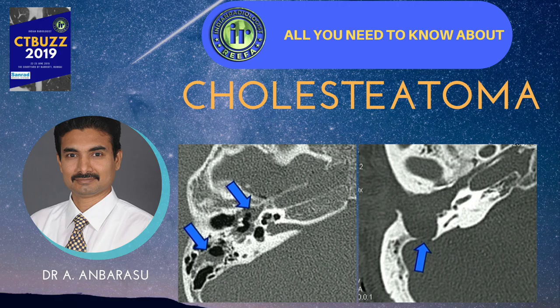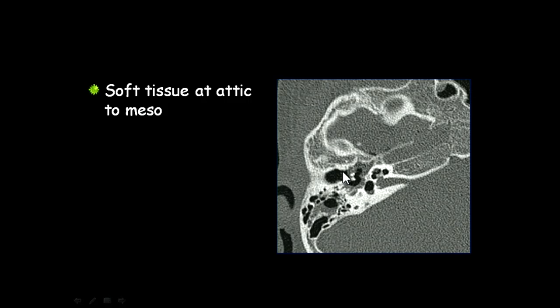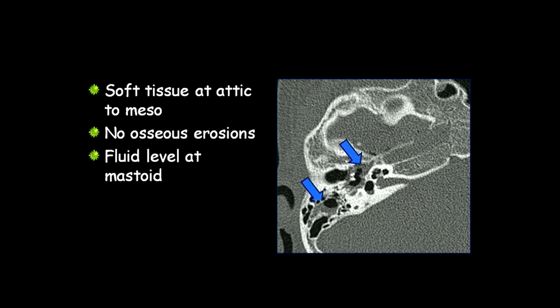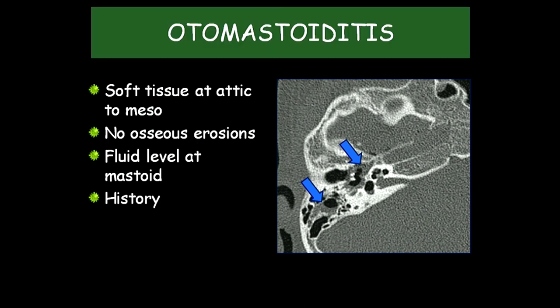You see soft tissue at the attic or mesotympanum. The ossicular chain seems to be intact, but you see an air cell which looks like a coalescent cell, and there is a fluid level. There is no osseous erosion in this particular patient. There is a fluid level at the mastoid, a history of otorrhea, and the patient has ear pain — this is otomastoiditis.